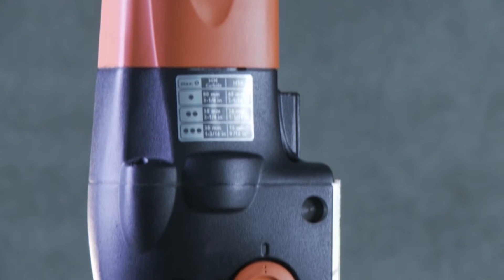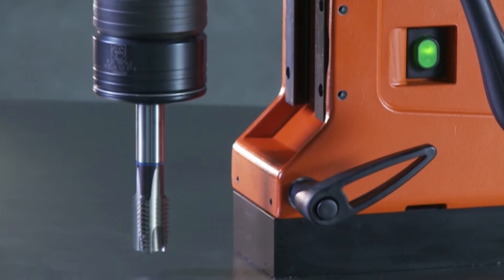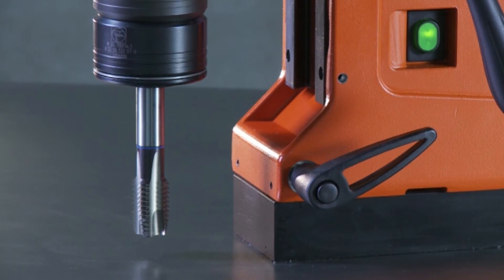Fein offers special collets with an integrated slip clutch for blind holes. This prevents the tap from binding in the blind hole and breaking.